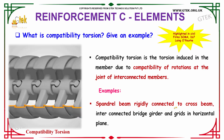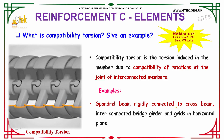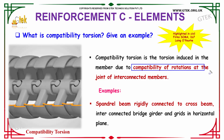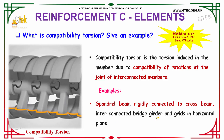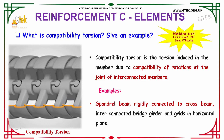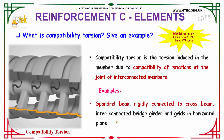Our next question is: what is compatibility torsion? Give an example. Compatibility torsion is the torsion induced in a member due to compatibility of rotations at the joints of interconnected members. Examples include a spandrel beam rigidly connected to a cross beam, interconnected bridge girders, and grids in a horizontal plane.